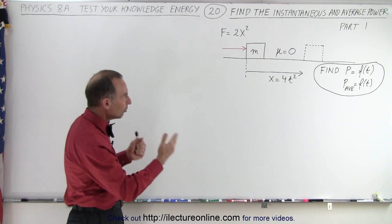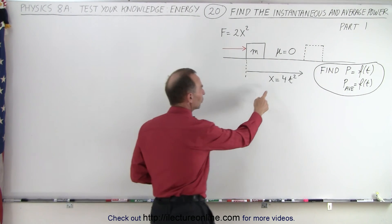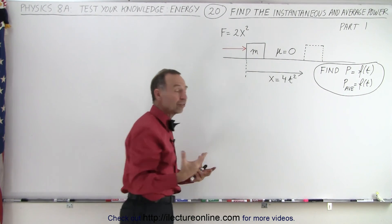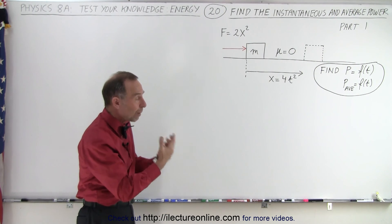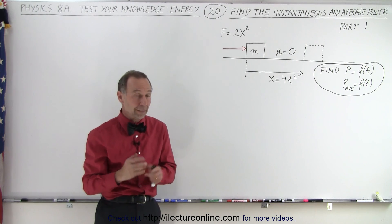Also, the distance covered is expressed in terms of t. In this case, the distance covered is equal to 4t squared and they're asking us to find the instantaneous power as a function of time and to find the average power as a function of time.